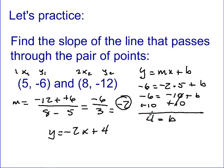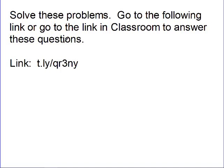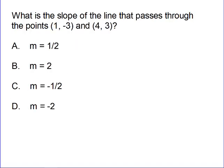In the questions today, you're just going to find the slope. I'd like you to go to the link in classroom to answer the questions. Question one: what is the slope of the line that passes through the points (1, negative 3) and (4, 3)? Question two: what is the slope of the line that passes through the points (negative 5, 8) and (11, 16)? Until the next lesson, talk to you later.